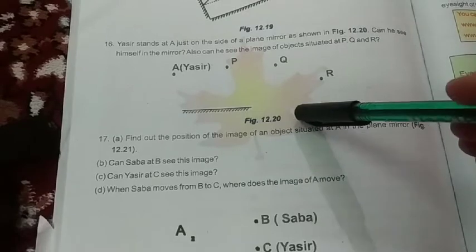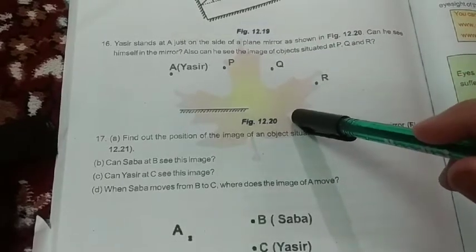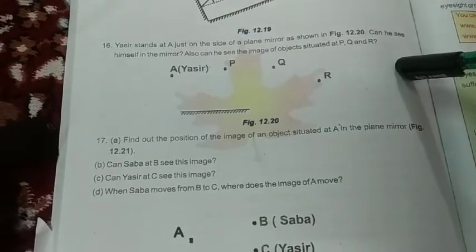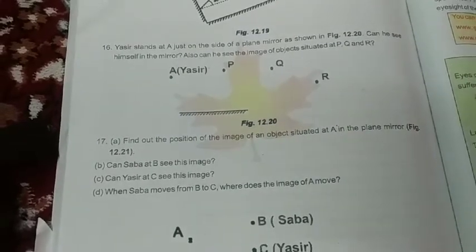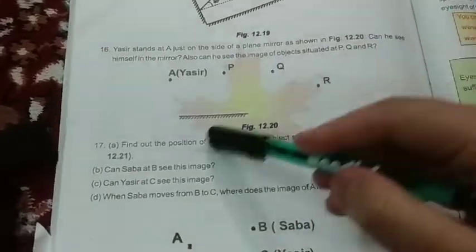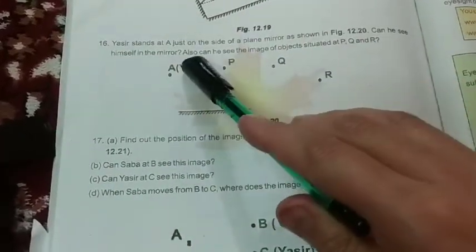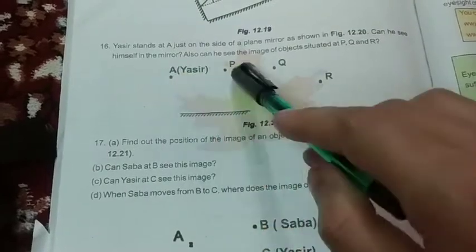As shown in Figure 12.20, can he see himself in the mirror? Also, can he see the image of objects situated at P, Q, and R? This is the diagram, and it's being said that this is a plane mirror and the position of Yasir here is at A, and these are three objects P, Q, and R.